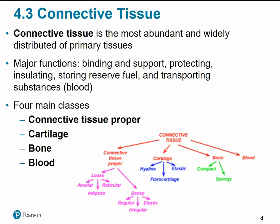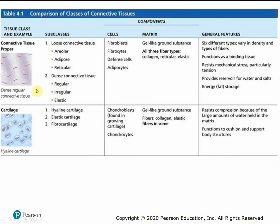Connective tissue is the most abundant and widely distributed of the primary tissue types. Its major functions include binding, support, protection, insulation, storing reserve fuel, and transporting substances like blood. The four main classes of connective tissue are: connective tissue proper (things like tendons and ligaments), fat tissue, cartilage, bone, and blood. All connective tissues share three main elements: ground substance, fibers, and cells. Ground substance and fibers together form the extracellular matrix. The different types of connective tissue are based on the composition and arrangement of these three elements.